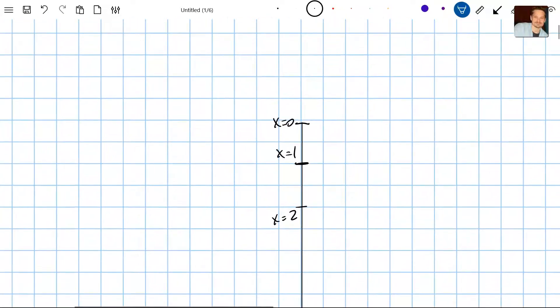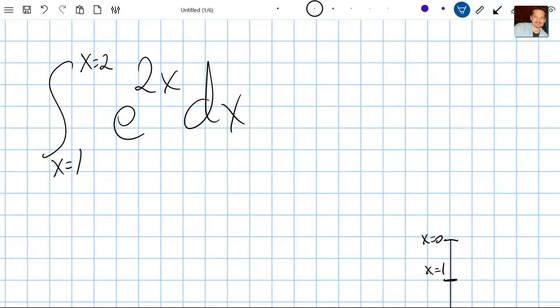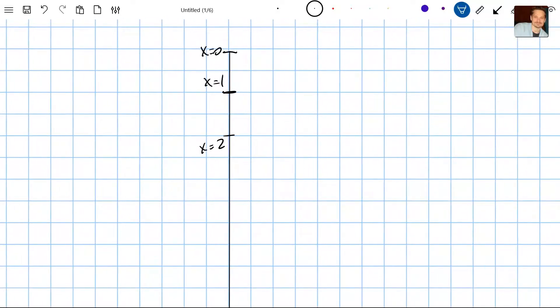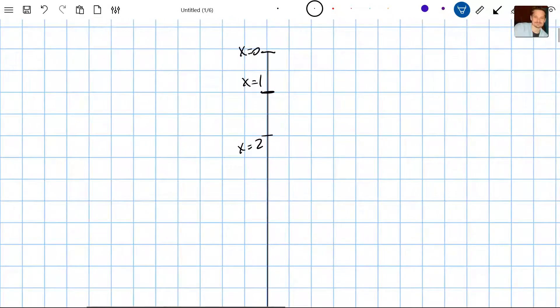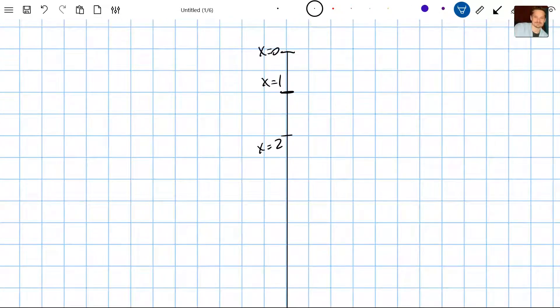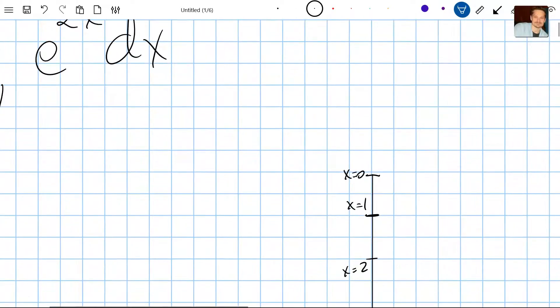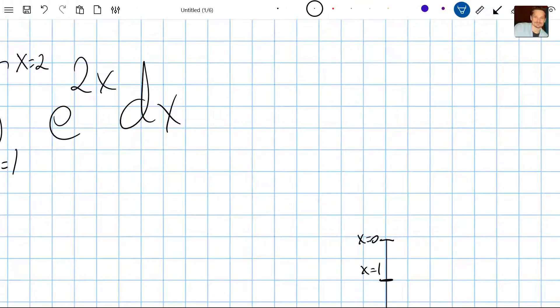So here, this is going to be x equals 1. And this is going to be x equals 0. And then this is going to be x equals 2. And next, take a look. Because the integrand is e to the 2x, and because of the way I have my x-axis oriented, not left, right, but up and down, I'm going to evaluate the integrand. So in other words, for example, when x has the value 1, you plug it into the integrand, which is e to the 2 times 1. So that's e to the 2nd.